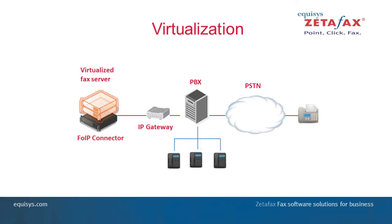In summary, there are three ways of utilizing the FOIP connector in a virtualized environment: by connecting to telephone lines supplied by a telecom supplier via an IP gateway, by connecting directly to an IP PBX, or by connecting via an IP gateway to an analog or digital PBX.